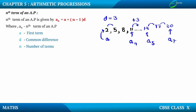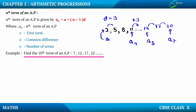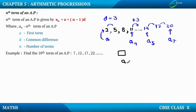Let us see one example. Find the tenth term of an AP: 7, 12, 17, 22. We are supposed to find out the tenth term. We have the first, second, third, and fourth terms given, and the tenth term lies somewhere ahead. The tenth term can be called as a10 — if the first is a1, second a2, third a3, then the tenth is a10.